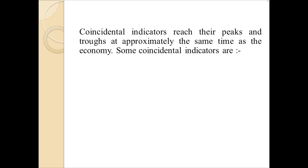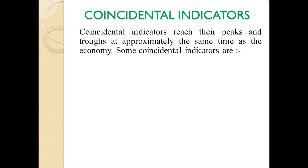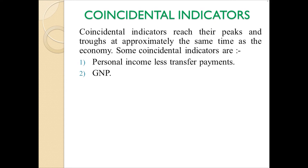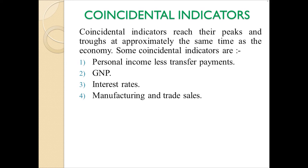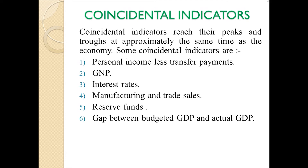Coincidental indicators reach their peaks and troughs at approximately the same time as the economy. Some coincidental indicators are: personal income less transfer payments, GNP (Gross National Product), interest rate prevailing in the economy, manufacturing and trade sales, reserve funds kept aside by a country, and the gap between budgeted GDP and the actual GDP.